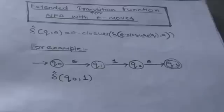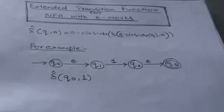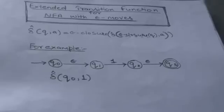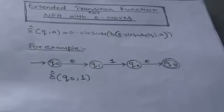Our next topic is extended transition functions for NFA with empty moves. In previous videos, you saw that the extended transition function is used to find the transition for a finite automaton when we provide a string of input symbols. The simple transition function is used for a single input symbol, but the extended transition function handles a string of input symbols.